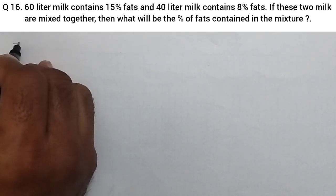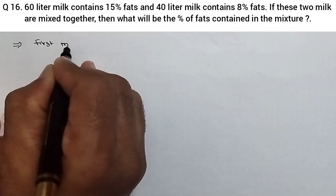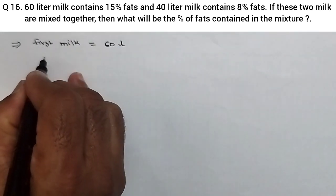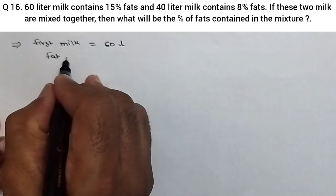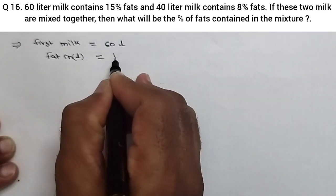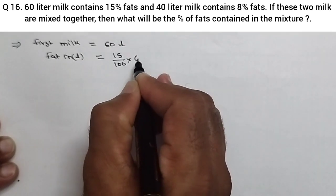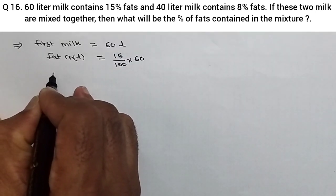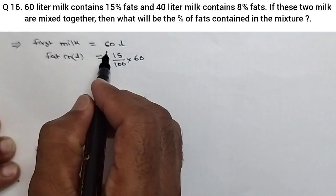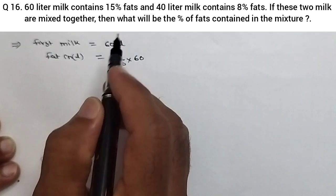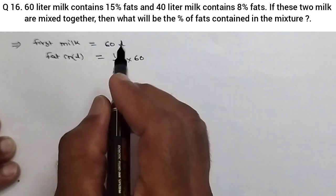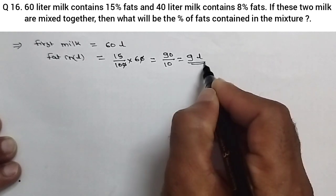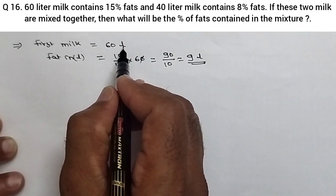First milk is given 60 liter. First milk quantity is 60 liter, and in 60 liter there are 15% fats. So fat in liters for this milk, that will be equal to 15 upon 100 into 60 liter. Meaning of 15% means if milk is 100 liter, then it contains 15 liter of fat. But here milk is 60 liter, so we must multiply 15 upon 100 into 60. If we solve this, this two zeros will get cancelled, 15 into 60 is 90 upon 10, that is 9. So 9 liter is the fat content for 60 liter milk.